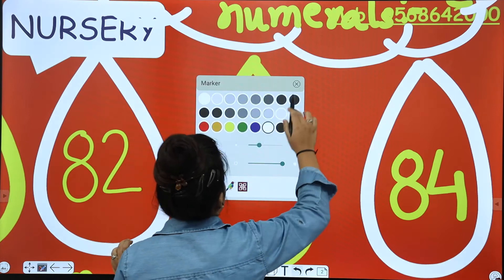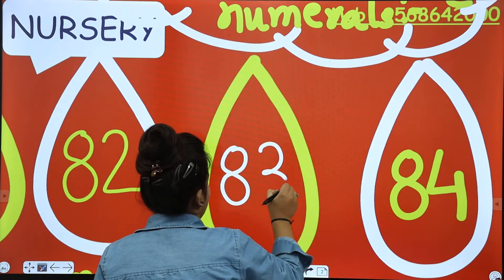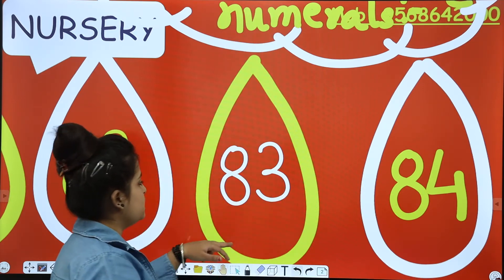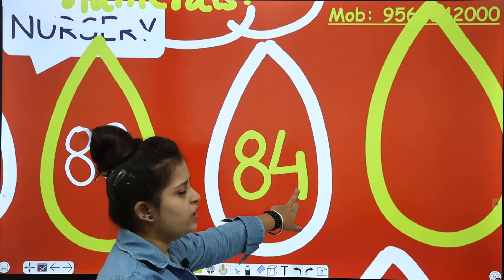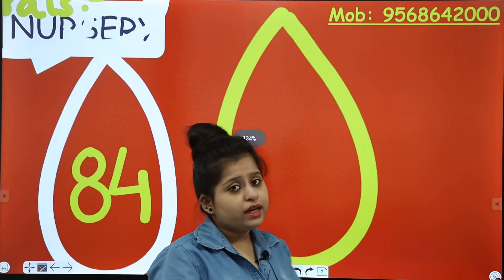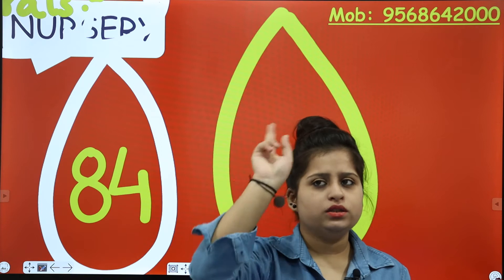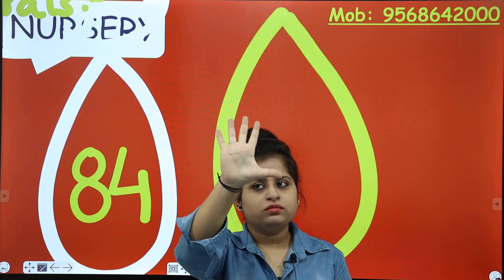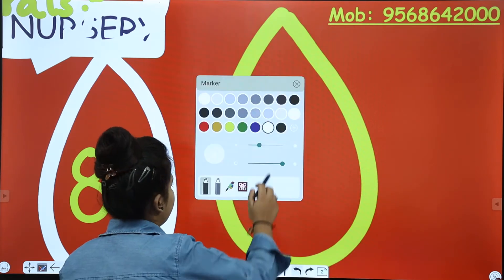We will repeat because you will have an assignment provided, and you will complete it and send it. So this is 83. After that we are having 84. And then blank — count after 4: 1, 2, 3, 4, 5. So what will be here? 85.